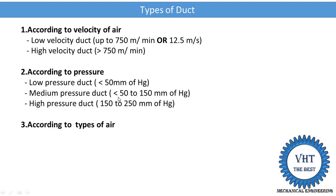The next classification is according to the types of air. In a central air conditioning system, we supply air and also return air from the room. On that basis it is classified as the supply air duct. The supply air duct supplies the air from the air conditioning unit to the room — it transfers the conditioned or cooled air from the unit to the room. Next is the return air duct.